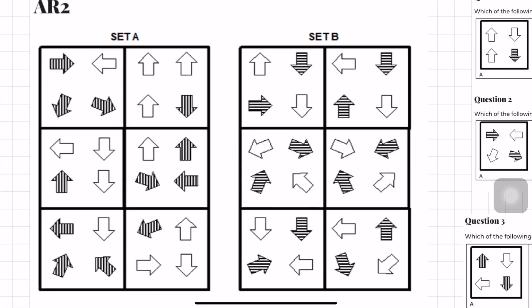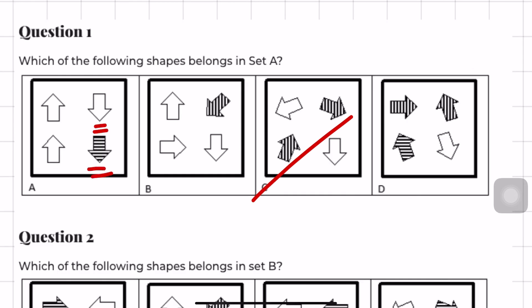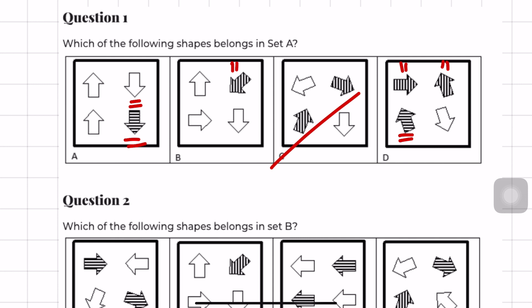Looking at this AR2 example we have set A and set B, each with four arrows per box pointing in various directions, some shaded and some not. A quick glance tells us that all boxes in set A have an odd number of shaded arrows, and all boxes in set B have an even number. Moving to the questions: we're looking for a shape belonging to set A, so we can immediately cancel out C. The main discriminating feature among the answer options is arrow bar orientation — set A has vertical bars, set B has horizontal. Answer options A and D have horizontal bars, so the answer must be B.